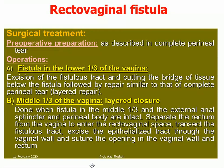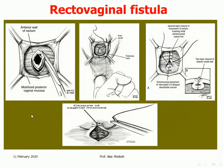For middle-third fistula, first separate the rectum from the vagina to enter the rectovaginal space, then transect the fistula tract, excise the epithelialized tract through the vaginal wall, and suture the openings in the vaginal wall and rectum. As shown in the picture: we separate the rectum first, excise the fistula opening, repair the rectal mucosa in two layers, then repair the vaginal mucosa. The rectal wall mucosa and pre-rectal fascia are repaired, then the vaginal mucosa.